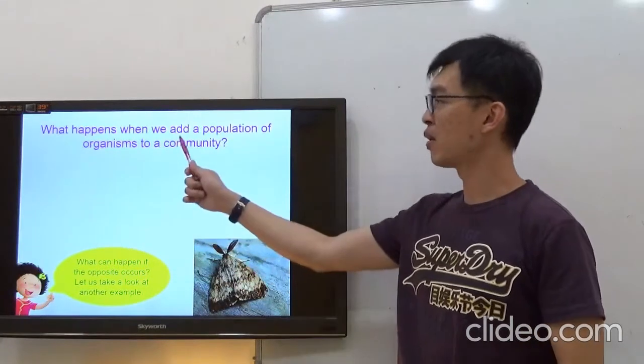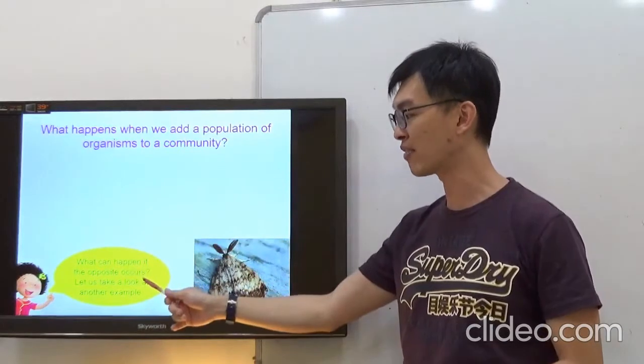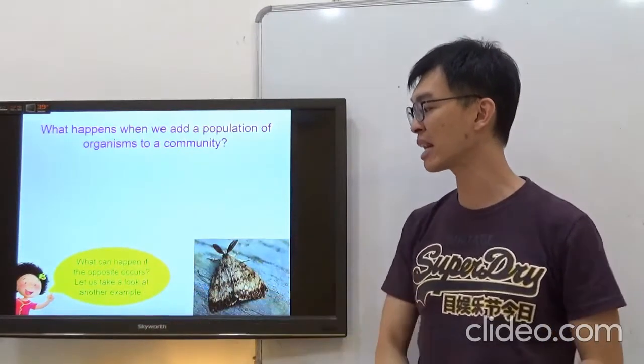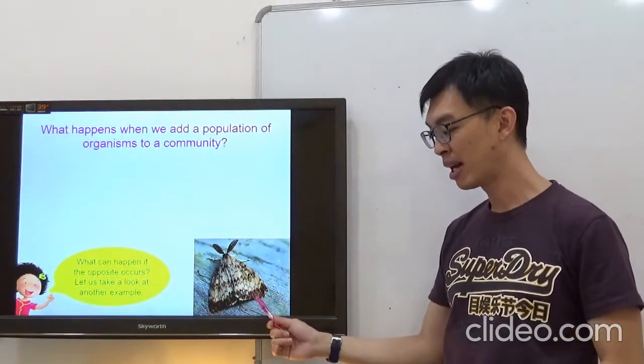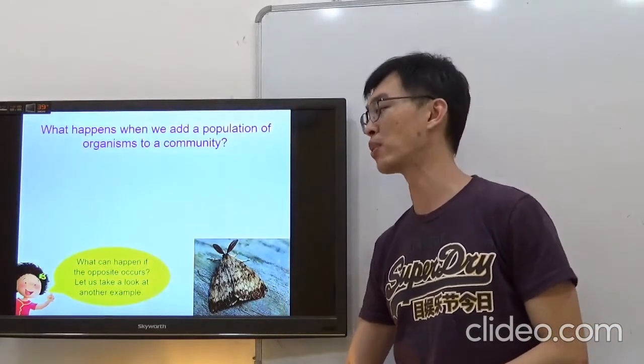Next, what happens when we add a population of organisms to a community? What can happen if the opposite occurs? Let's take a look at another example. This is Gypsy moth. It is a true story as well.